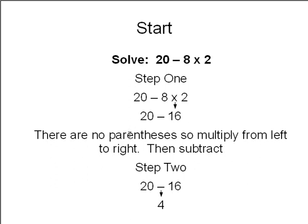There are no parentheses, so multiply from left to right, then subtract. Step 2: 20 minus 16 equals 4. 4 is our answer.